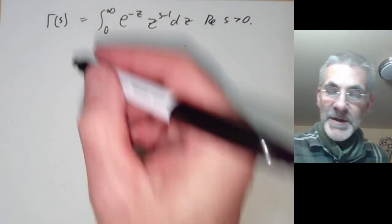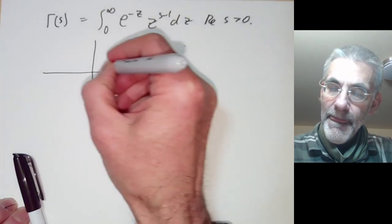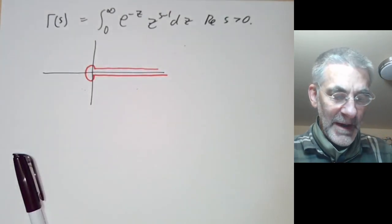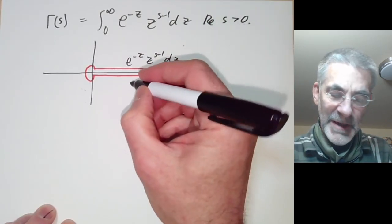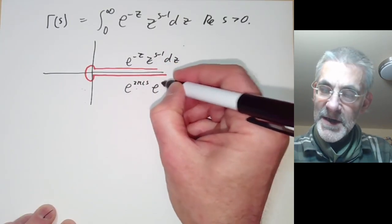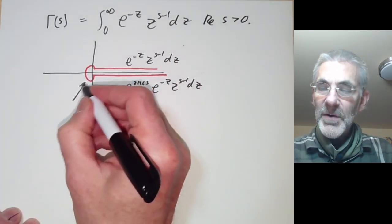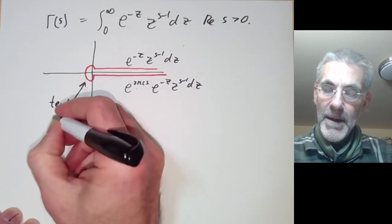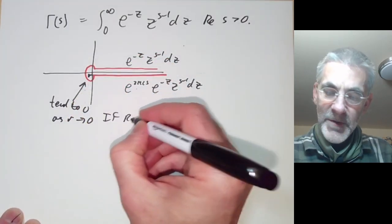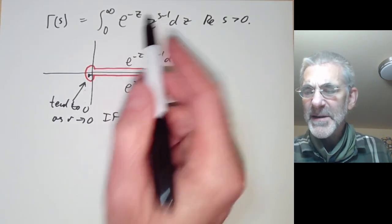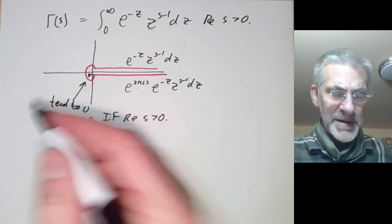We are going to convert this into something that looks a little bit like the Bromwich contour. On one segment we integrate e to the minus z times z to the s minus 1 dz, and on another segment we integrate something like e to the 2πis times e to the minus z times z to the s minus 1 dz. The integral around the little circle tends to zero as r tends to zero if the real part of s is greater than zero. If the real part of s is less than zero, this bit becomes rather large near the origin and the integral around the little circle is not well behaved.